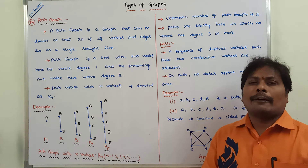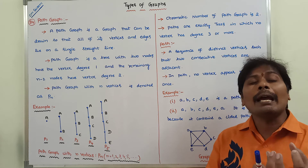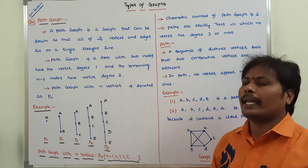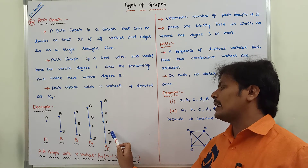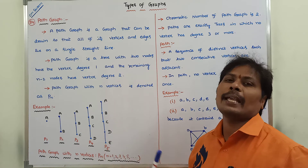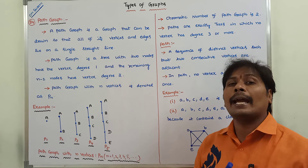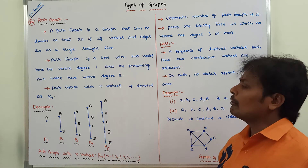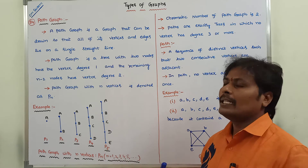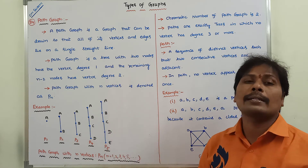Now we go to the path graph. In a path graph, vertices and edges lie on a straight line. For example, in this path graph, the vertices are A, B, C, D, and E, and the edges are AB, BC, CD, and DE. A path graph is a graph in which all the vertices and edges lie on a straight line — that graph is called a path graph.